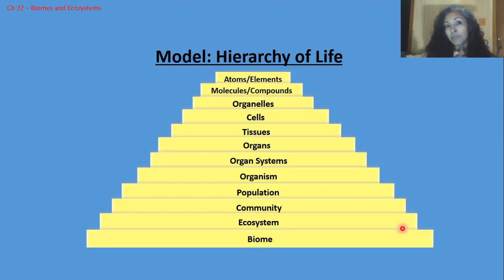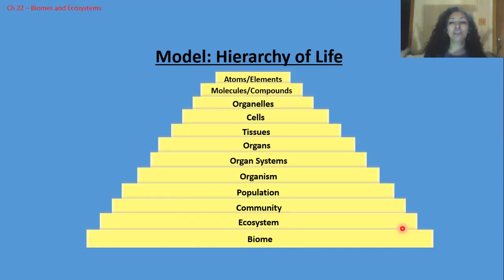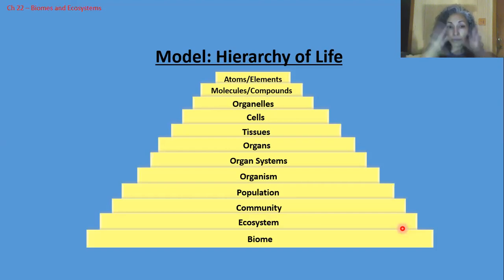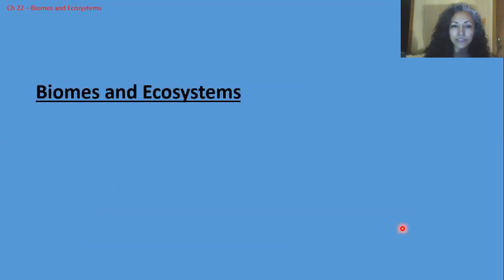A biome is a collection of the same — similar — ecosystems. There is one more level above the biome: the biosphere. That simply means all living things on Earth. We're going to focus on the biome level today.